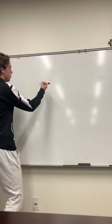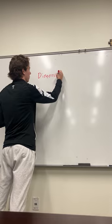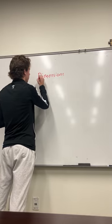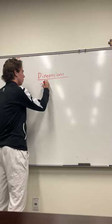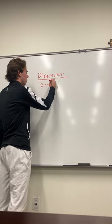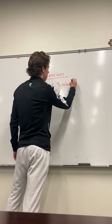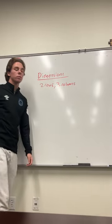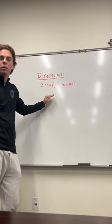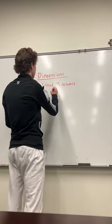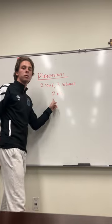First, it's important to understand the dimensions of a matrix and what that means. In the previous example, there were two rows and three columns — two rows and three columns. This makes up the dimensions of a matrix: the rows and the columns. So this would be called a 2 by 3. You always put the rows first and the columns second.